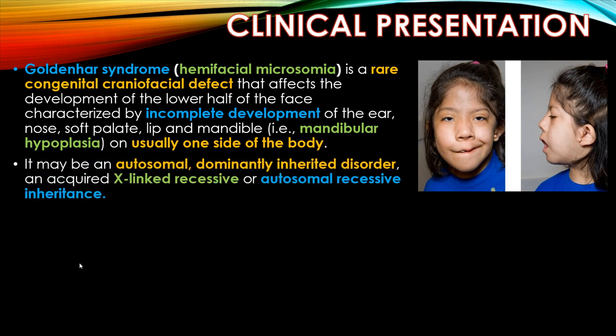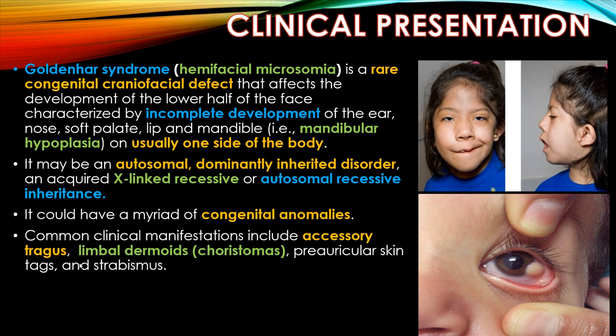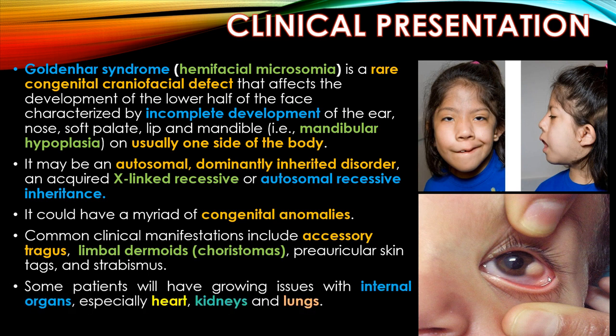It may be autosomal dominantly inherited, X-linked recessive, or autosomal recessive. It could have a myriad of congenital anomalies. Common clinical manifestations include accessory tragus, limbal dermoids, choristomas, preauricular skin tags, and strabismus. Some patients will have growth issues with internal organs, especially the heart, kidneys, and lungs.